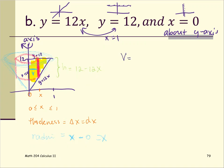So the volume equals the integral from 0 to 1 of 2π times x times the height, which is quantity (12 minus 12x), times the thickness dx. That's the radius, the height, and the thickness.